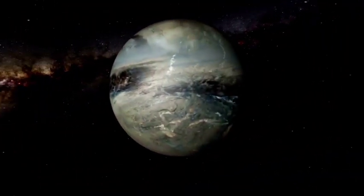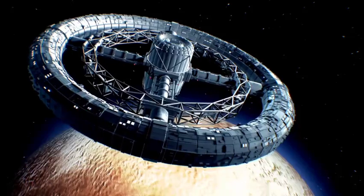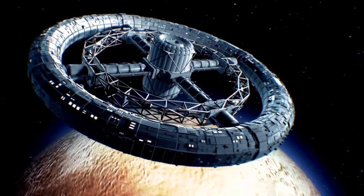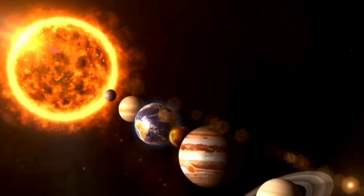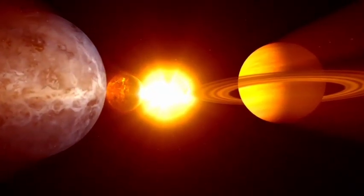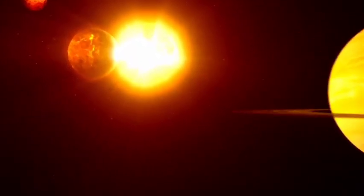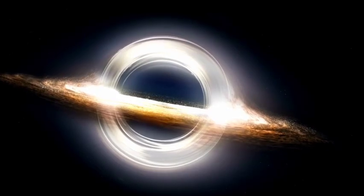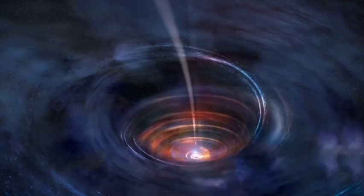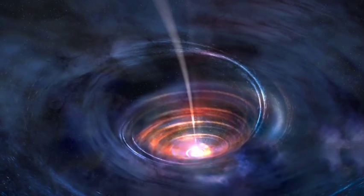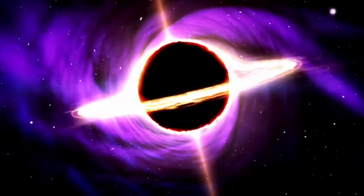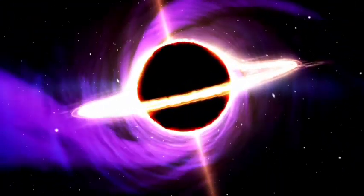Betelgeuse is known for its variability, with its brightness fluctuating over time. At its peak, Betelgeuse can shine incredibly bright, almost rivaling the brightest stars in the sky with a magnitude close to zero. It's crucial to understand that a star's brightness can change significantly. Comparing Betelgeuse to stars like Rigel and Aldebaran further emphasizes this point. Rigel and Aldebaran, while at times appearing similarly bright, can vary substantially in their luminosity.